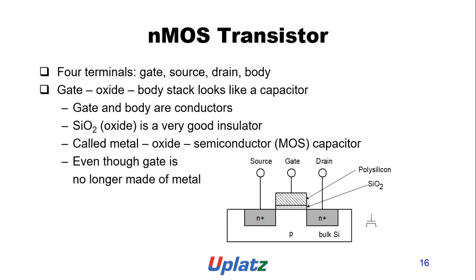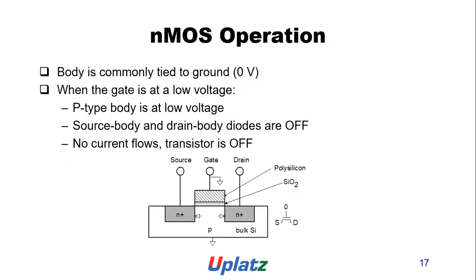NMOS operation: the body is commonly tied to ground. When the gate is at a low voltage, the P-type body remains at low voltage. Source-body and drain-body diodes are reverse biased, so no current flows.